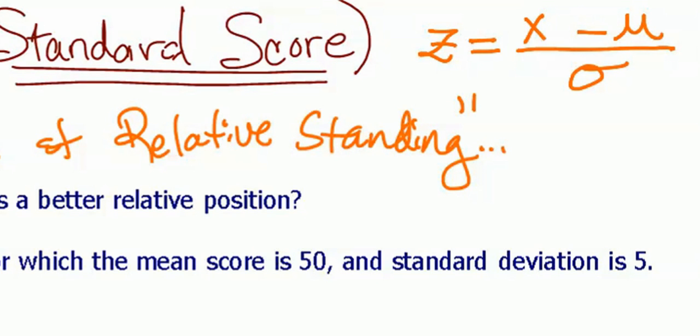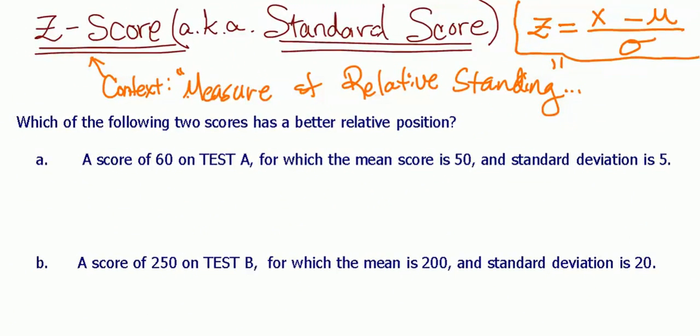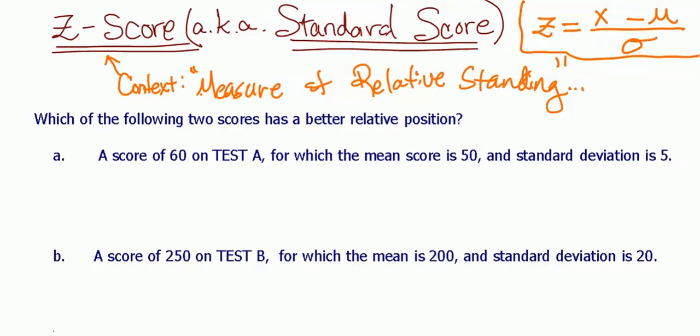And so that's basically what we're going to do. Once we have this calculation for each of the scores we want to compare, we have a level playing field, and we can compare them number for number once we have them in the form with the z-score. Let's take a look at this example.